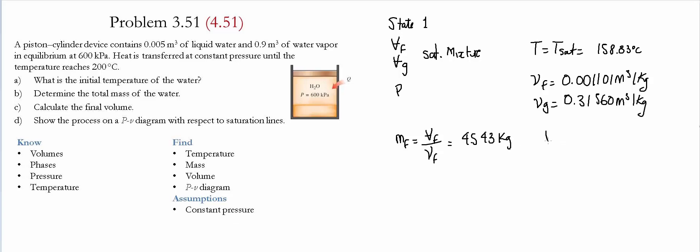We do the same thing for the vapor. The mass of the vapor is going to be the total volume of the vapor divided by the specific volume of the vapor, and this gives us 2.852 kilograms. To find the total mass, we simply add these two values, and the total mass is 7.395 kilograms.